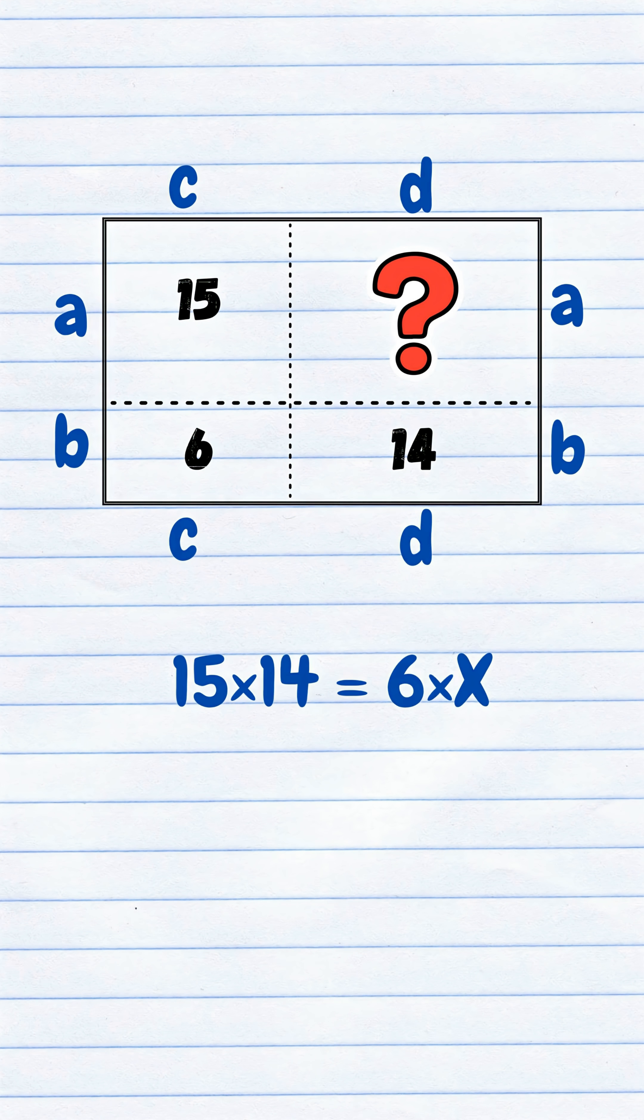So 15 times 14 equals 6 times X. Crunch the numbers. Divide both sides by 6. X equals 15 times 14 divided by 6. The answer is 35.